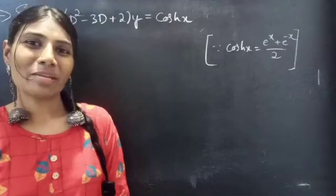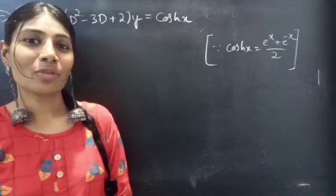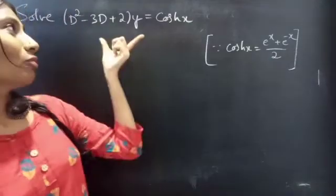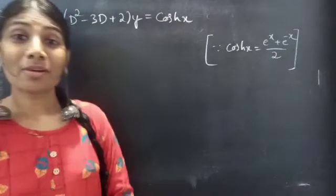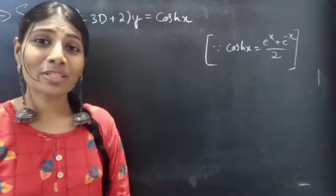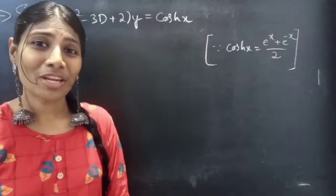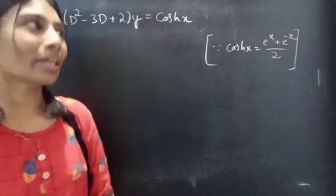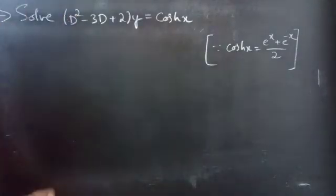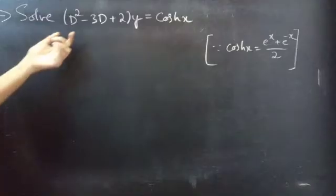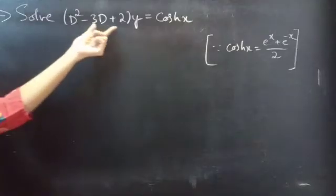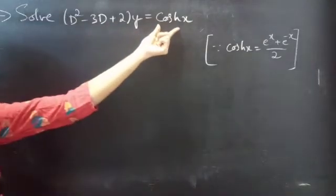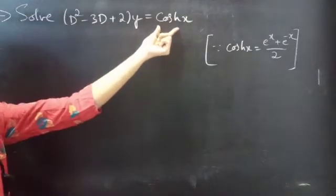Hello everyone, this is Akalina here. In this video, we are going to solve a problem from higher order linear differential equations. So let's get going. Problem: solve (D² − 3D + 2)y = cosh(x).